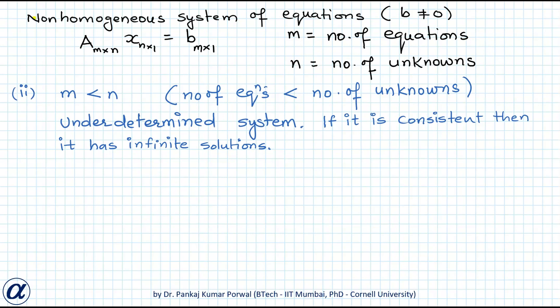Next we consider a non-homogeneous system of equations where the number of equations is less than the number of unknowns, that is m is less than n. Such a system is called an under-determined system of equations, and if such a system is consistent then it has infinitely many solutions. Let's see this using an example.